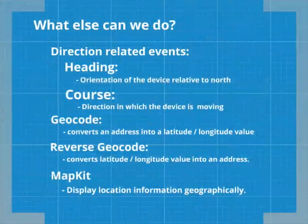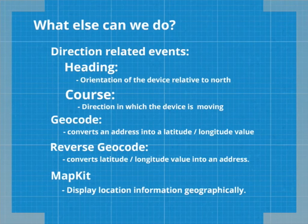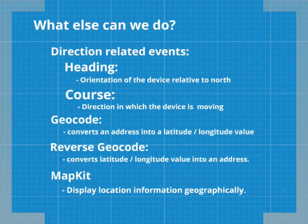The Core Location framework gives you more than location. It can also give you direction-related events, defined in terms of heading or course. Heading requires the device to have a magnetometer, which reports which direction the device is pointing. There is a slight difference if you want to know the actual direction the device is moving — this is independent of device orientation, defined as course, and uses GPS. So if you're driving, you can know which direction your user is driving in. If your app relies on this information, you can specify in the info.plist under UIRequiredDeviceCapabilities that your app requires a magnetometer or GPS to run.